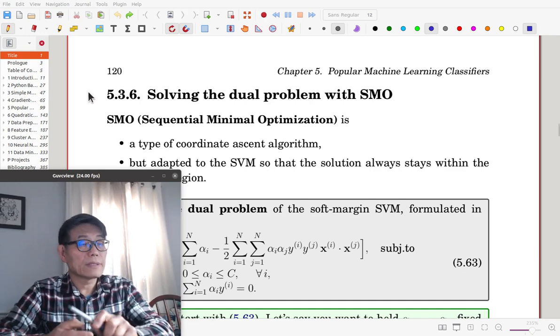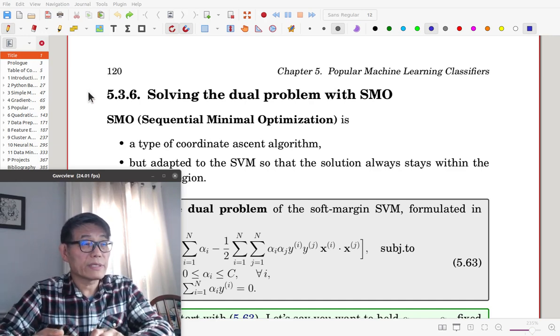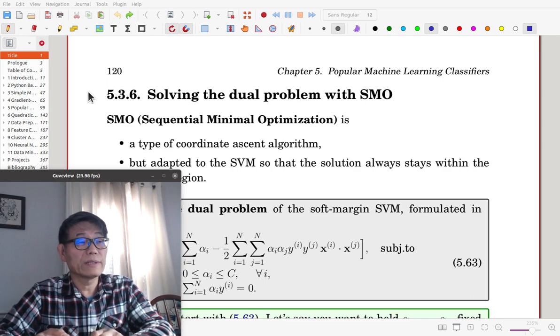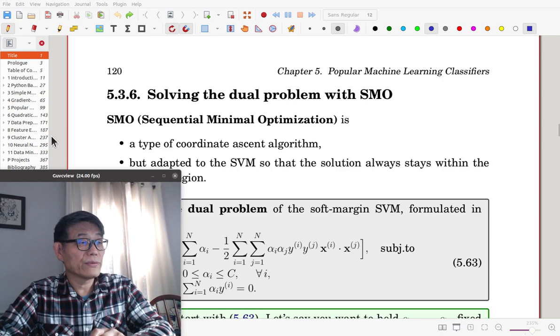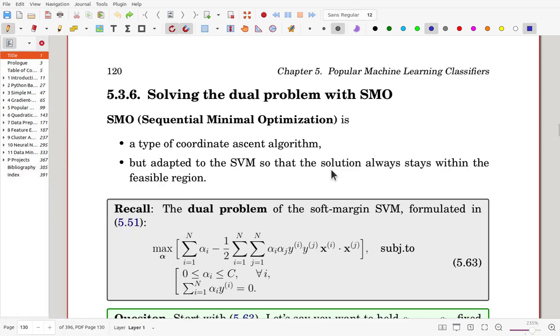It is the last part of Section 5.3, Solving the Dual Problem with SMO, Sequential Minimal Optimization. The algorithm is adapted to the SVM so that the solution always stays within the feasible region.